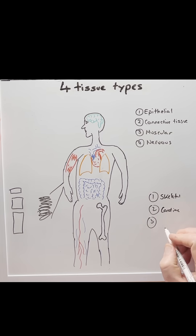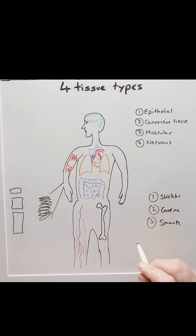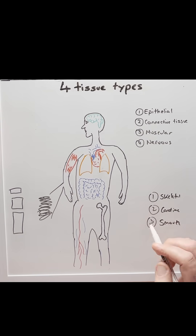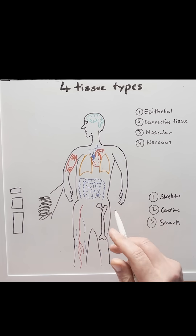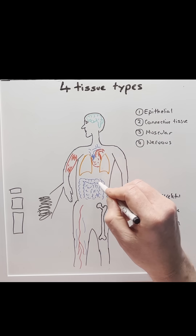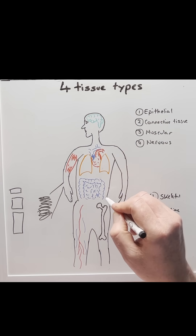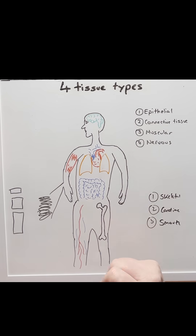Number three is smooth muscle, and that is found in the walls of hollow organs, such as the intestines and blood vessels, and it would help to move food along the intestines or blood along the blood vessels.